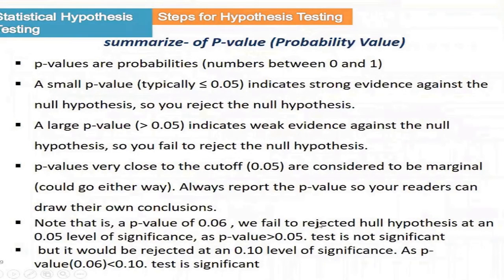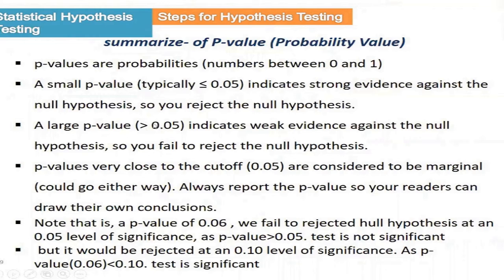Let us summarize about the p-value. P-value is a number, a probability between 0 and 1. You can calculate it from R, Python, SPSS, Stata, or some other statistical tool. If our p-value is less than 0.05 for a 5% level of significance, we are going to reject the null hypothesis and accept the alternate hypothesis. When the p-value is greater than 0.05, we accept the null hypothesis.